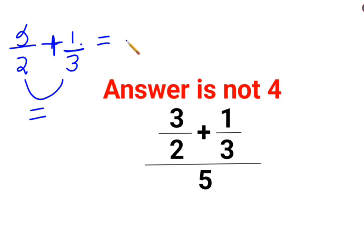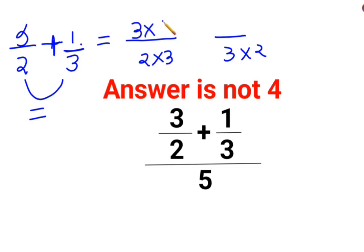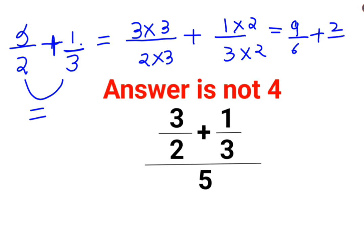So you need to convert 2 and 3 into one common denominator. You multiply 2 by 3, and whatever happens in the denominator should be carried out in the numerator as well — so 1 here gets multiplied by 2. You are now getting 9 by 6 plus 2 by 6, and since the denominators are the same, these can be added.